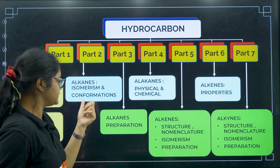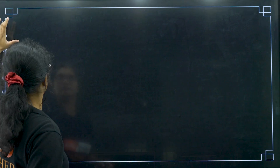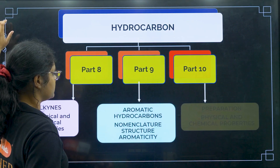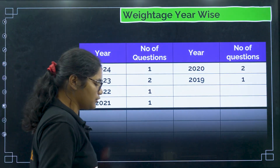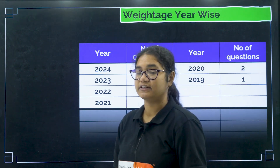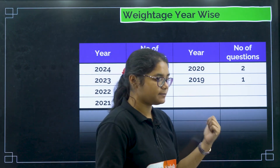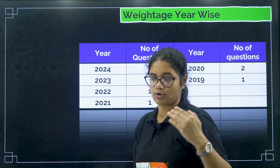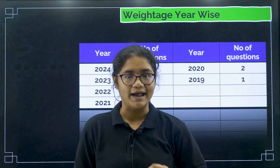In part 2 we are discussing isomerism and conformations. As I told you, this chapter will be a little lengthy, so these are all things we have to cover in different classes. You can expect 1 to 2 questions every year from this, but these two chapters — organic chemistry some basic principles and hydrocarbons — are the base of your organic chemistry, so do not miss this chapter at all.